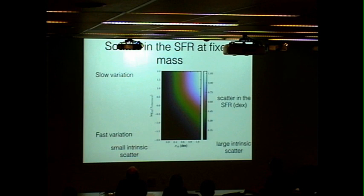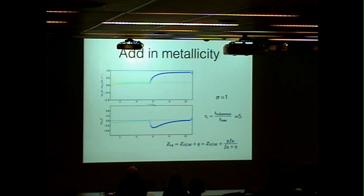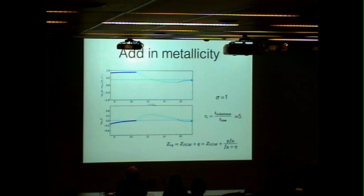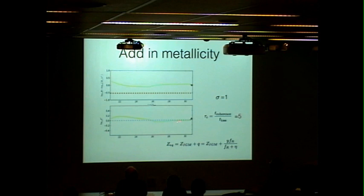We can also add metallicity to this model. And the point here, so on the top, I'm showing you star formation rate. And on the bottom, I'm showing you metallicity for the same galaxy. And the point I want to get across here is that they behave differently. So the star formation rate monotonically approaches new values when a new accretion rate is drawn. But the metallicity always tends, even though it has deviations, it will always tend back to this equilibrium value.